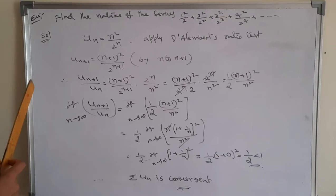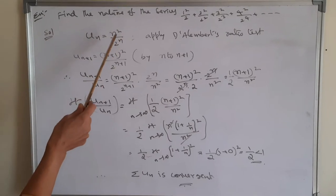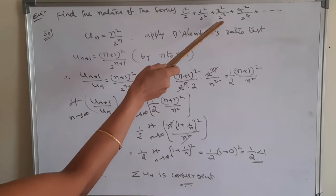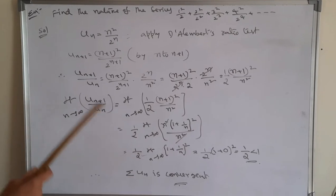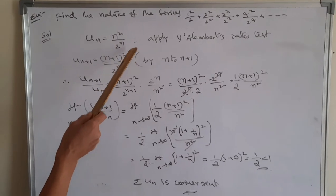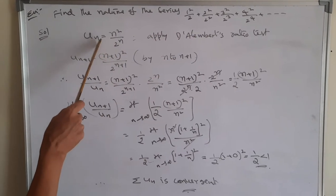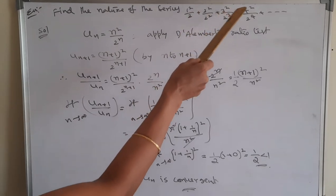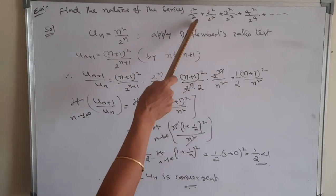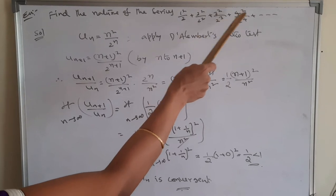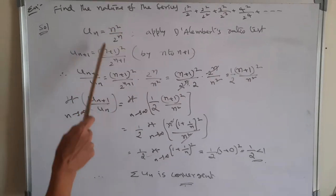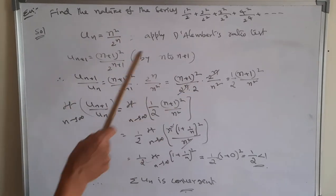Example: find the nature of the series 1²/2 + 2²/2² + 3²/2³ + 4²/2⁴ + ... The general term is un = n²/2^n, since the numerators are 1², 2², 3², ... (n²) and the denominators are powers of 2.